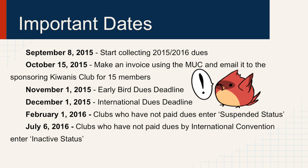The following dates are incredibly important with regard to dues submissions. Note that all dates listed are received-by dates — Key Club International must receive your dues by the listed date, meaning that your club should be submitting payment in advance. September 8, 2015: start collecting the 2015-2016 dues. October 15, 2015: make an invoice using the MUC and email it to the Sponsor & Key Club for 15 members. November 1, 2015: early bird dues deadline. December 1, 2015: international dues deadline. Dues that are delinquent after this date — you have a 60-day grace period to submit your dues before your club enters suspended status.